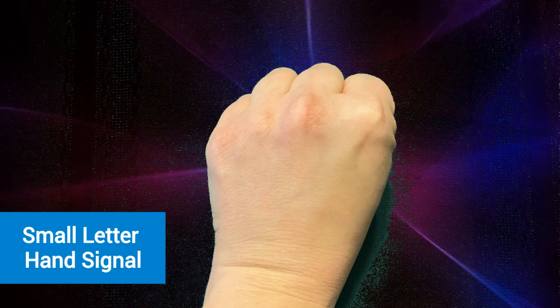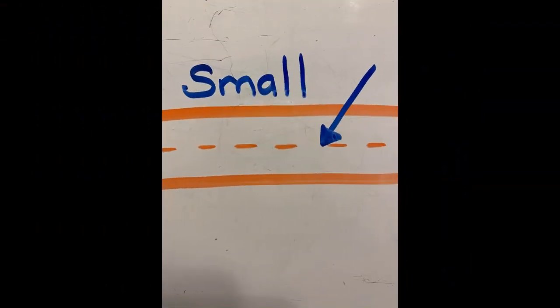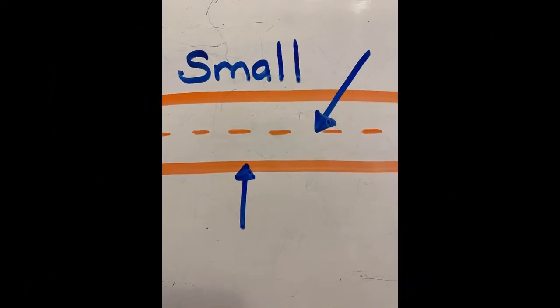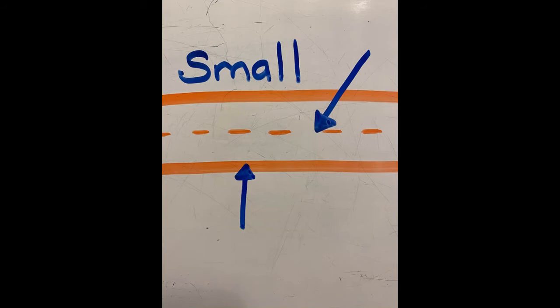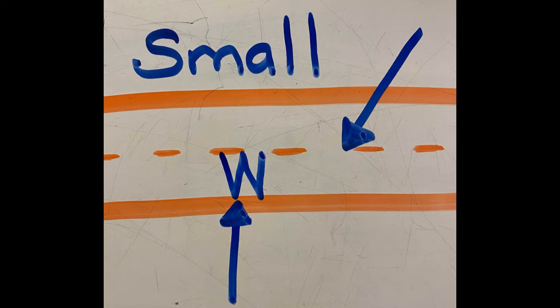Small letters start on the dotted line. They bump the bottom line. Letter W is a small letter.